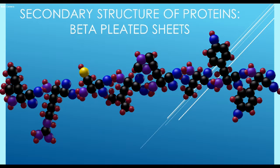Another common shape is a beta pleated sheet, as is found in silk.